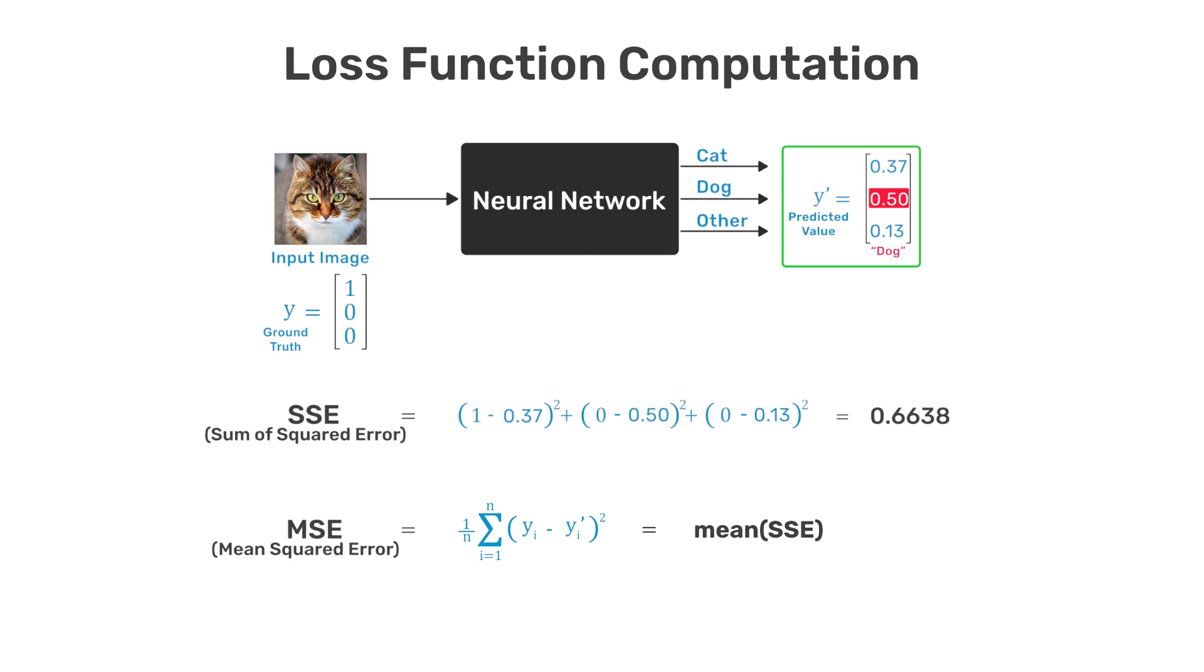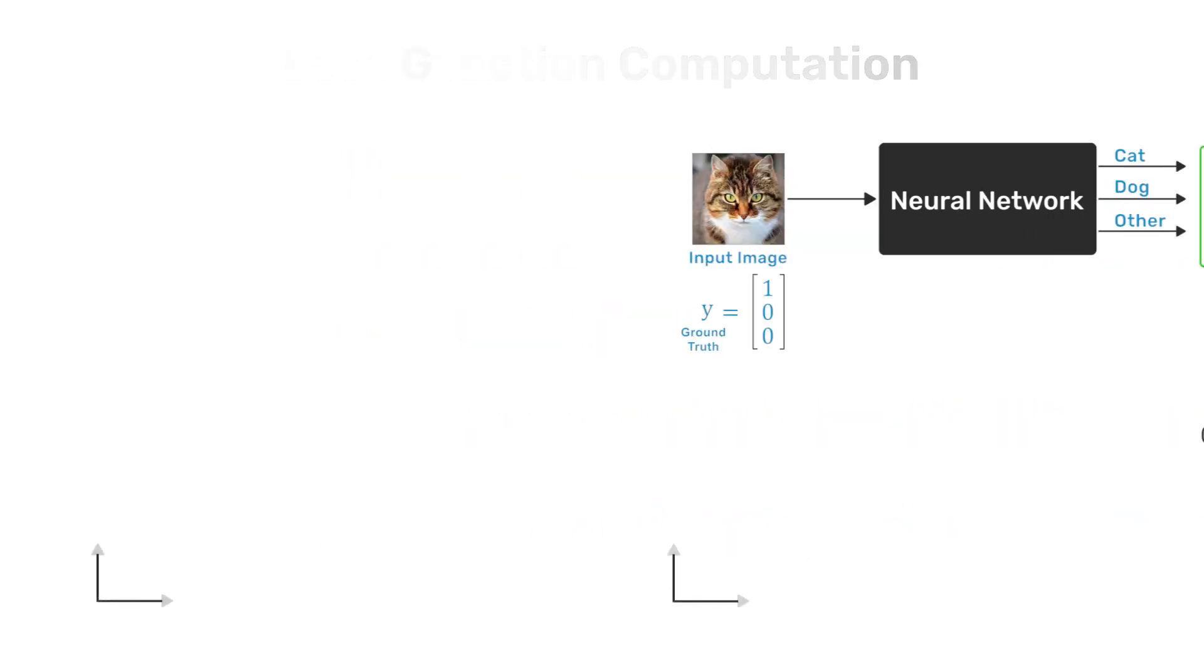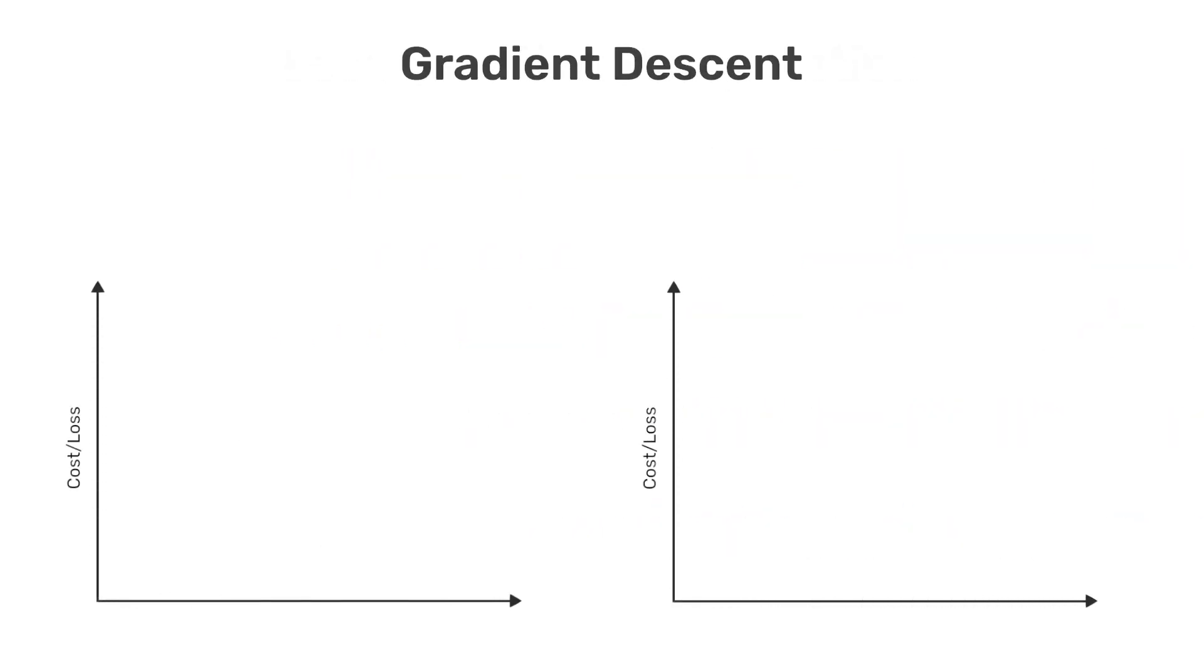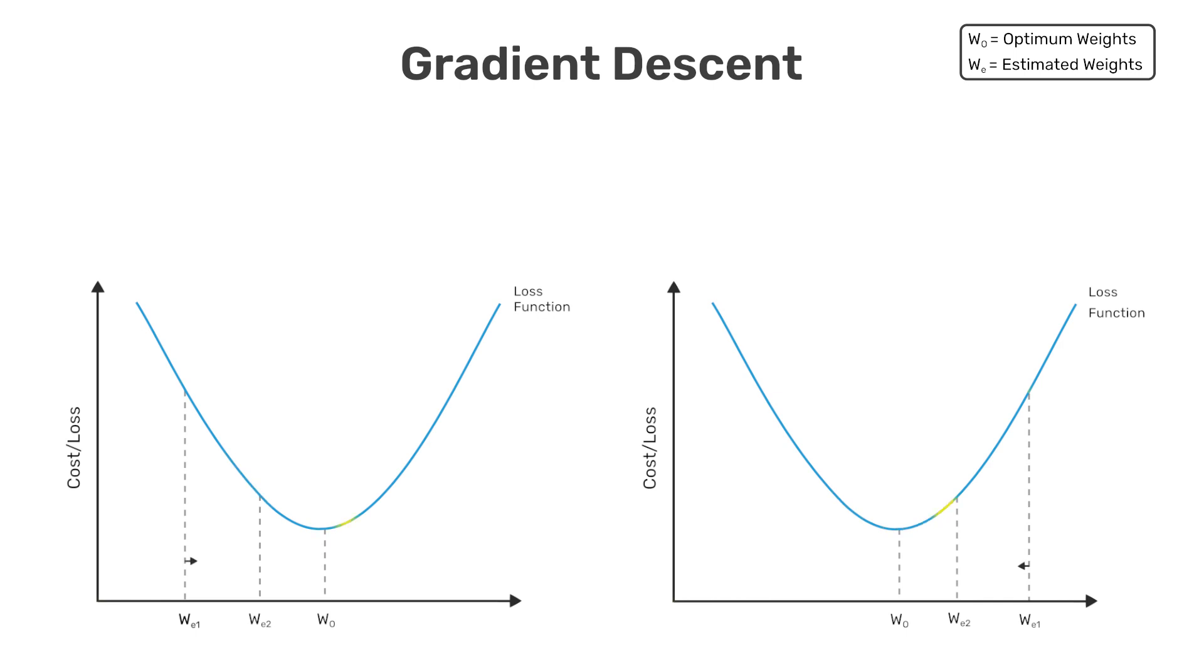Fortunately, there's a principled way to tune the weights of a neural network, which is called gradient descent. For simplicity and visualization purposes, we're going to illustrate the concept with just a single tunable parameter called w, and we're going to assume that the cost function is convex and therefore shaped like a bowl as shown in the figure.